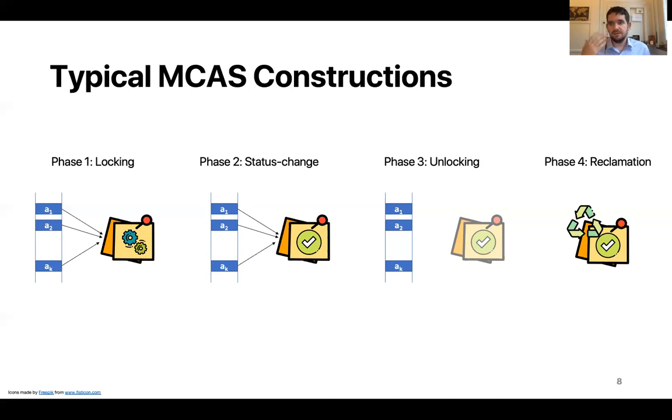And finally, the fourth phase is the reclamation phase. In this phase, we reclaim the memory of the descriptor for future reuse. Now, in existing constructions, the first three phases are on the critical path, meaning that all three phases are executed before returning from a given MCAS operation. And the reclamation phase is done off the critical path in the background.